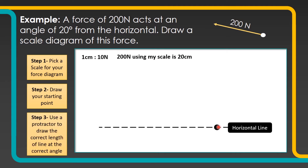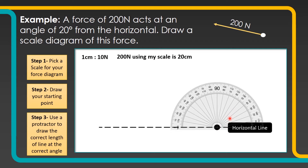The next part is to use a protractor to draw the correct length of line at the correct angle. I'm going to put my protractor on the piece of paper, measure 20 degrees, and at 20 degrees I'll draw a little dot so I know where my force arrow has to go through.